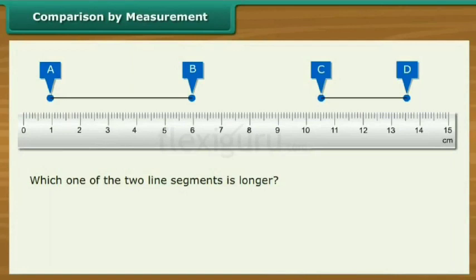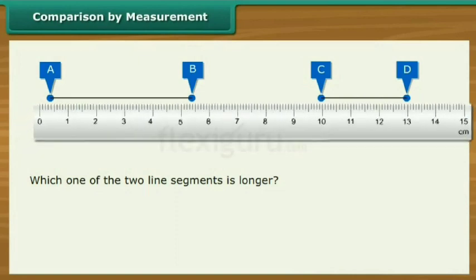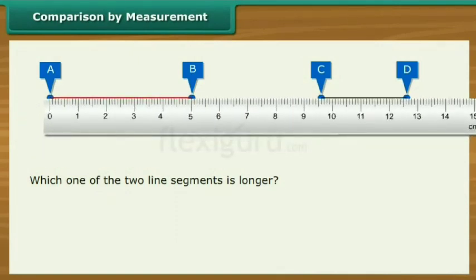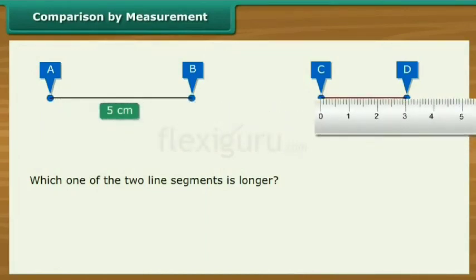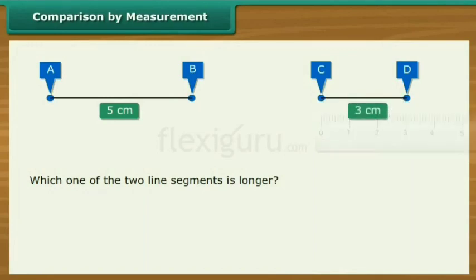Let us use the centimeter side to measure the line segment. Place the ruler beneath AB such that one end of the ruler is right beneath A. Mark the length of AB. It is 5 centimeters. Repeat the process for CD. The length of CD is 3 centimeters. Therefore, AB is longer.